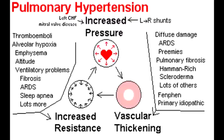What can be the consequence of pulmonary hypertension? Pulmonary hypertension will result in atherosclerosis, medial hypertrophy, and intimal fibrosis of the pulmonary artery. We already mentioned earlier in the chapter that long-standing pulmonary hypertension can lead to right-sided heart failure.